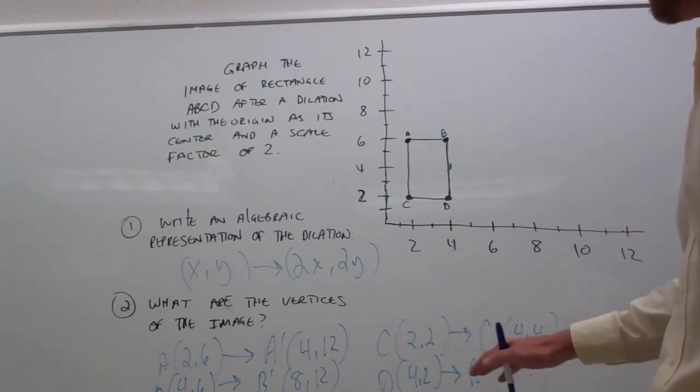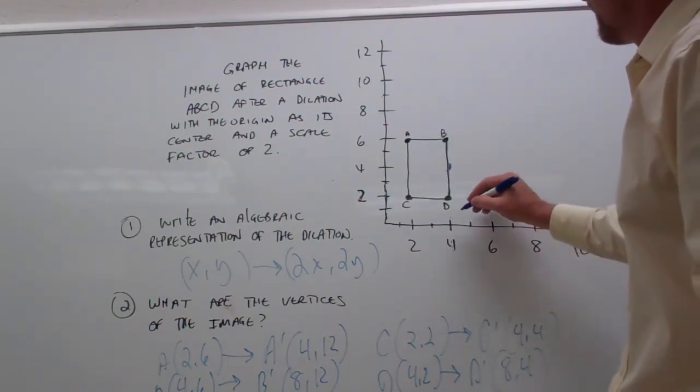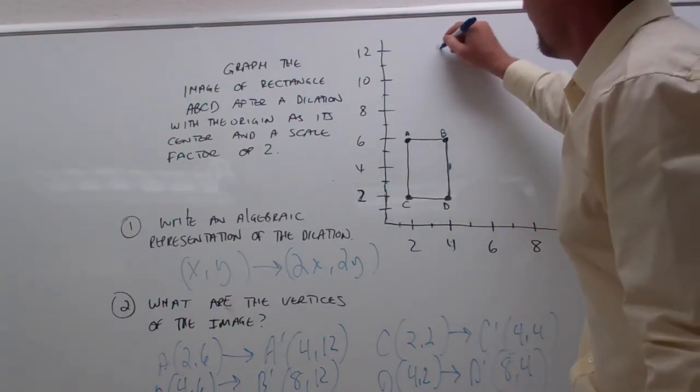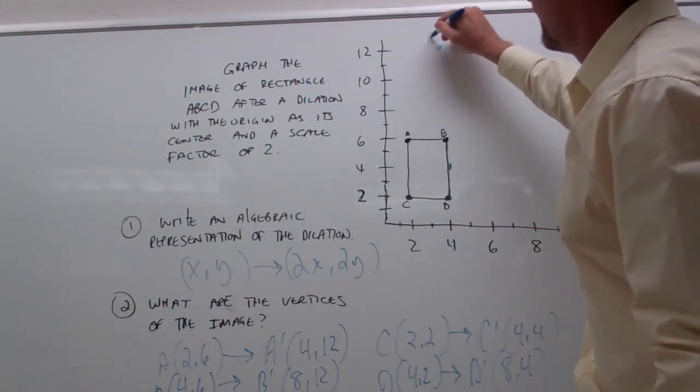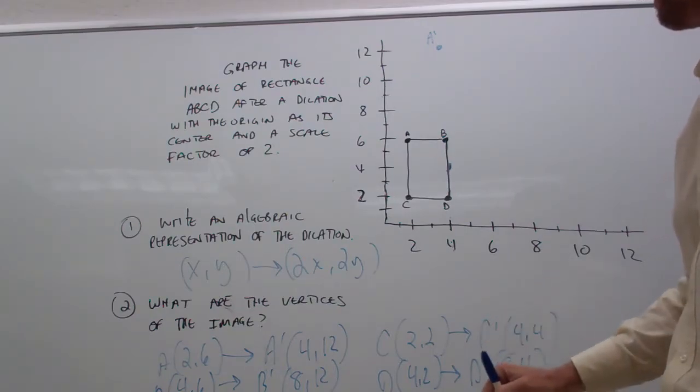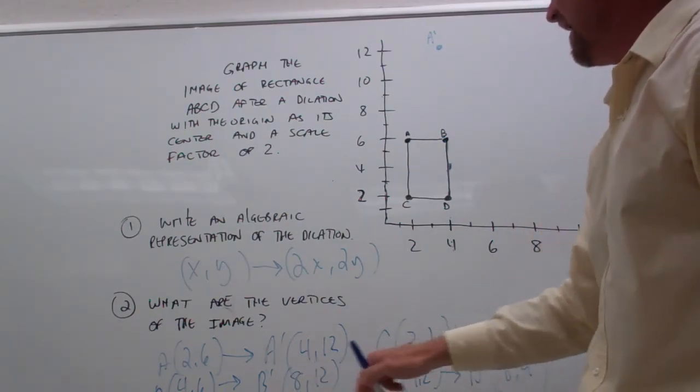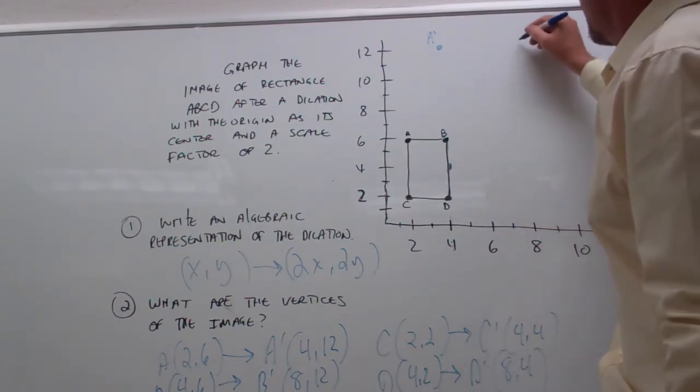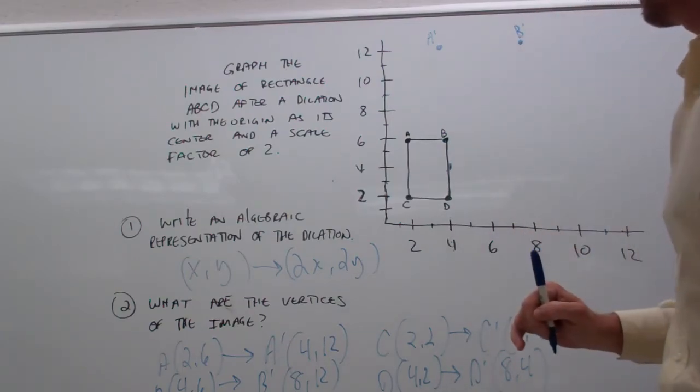Let's take a look. So, A prime, 4, 12, when x is 4, y is 12, there's where we find point A prime. And when x is 8, y is 12, is where we'll find vertex B prime.